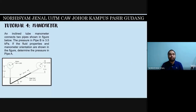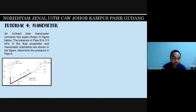Alright, so now we will continue with tutorial number 4, manometer. If the fluid manometer connects two pipes shown in the figure below, the pressure in pipe B is 3.5 kilopascal. Determine the pressure in pipe A. The question requires you to do a manometer calculation. Pipe B will have a pressure of 3.5 times 10 to the power of 3 pascal — make sure you change it from kilopascal to pascal, as it's easier to calculate.